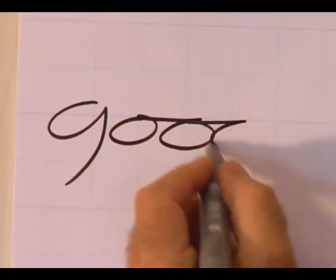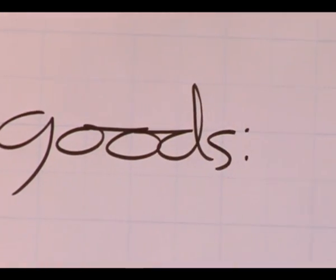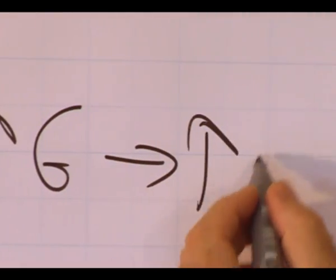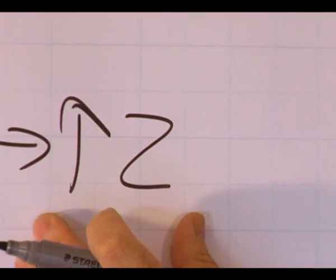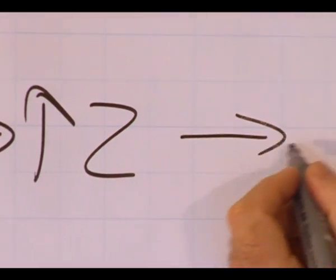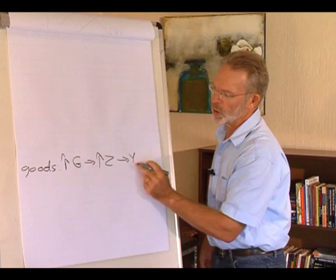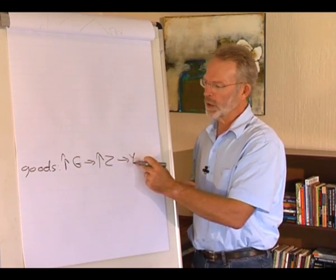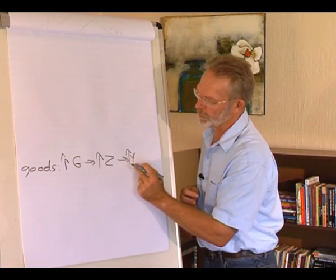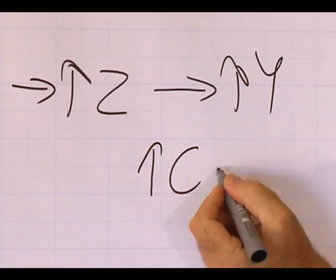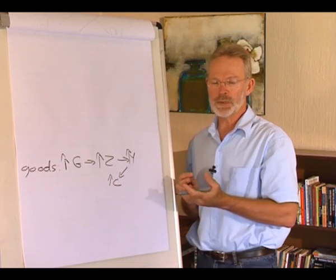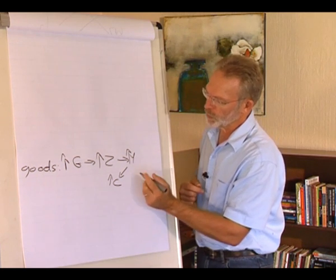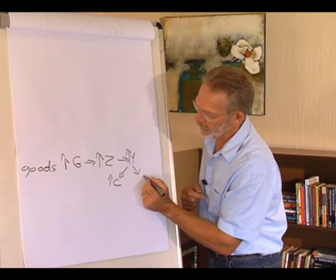The initial effect is on the goods market. The increase in government spending leads to an increase in demand for goods and services. This increased demand leads to an increased level of output. We know that private consumption expenditure is a function of the level of output, so if there's an increase in output, private consumption expenditure will also increase. Likewise, investment is also determined by the level of output, and this increase in output will lead to an increase in the level of investment.